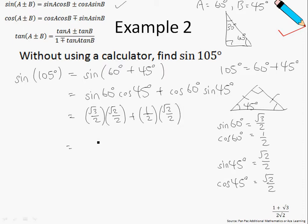So simplifying all these, I realize that I have a common denominator that's created. So if I were to just simplify this, I'll have √3 times √2 plus √2 over 4.